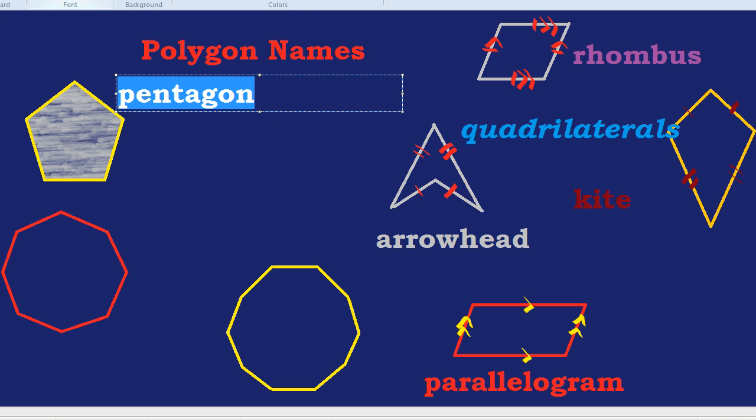If all the sides are equal, it's called a regular pentagon. Again, if all the sides are equal length, it's a regular pentagon. But if they're just any old size, but there's five sides, that's just a normal pentagon.